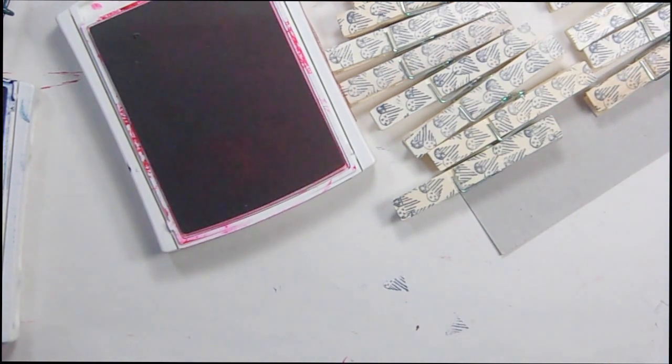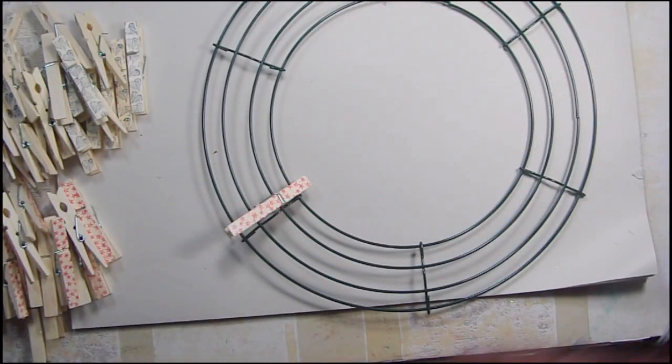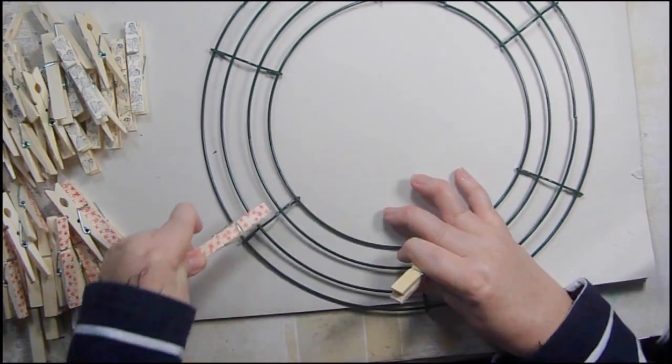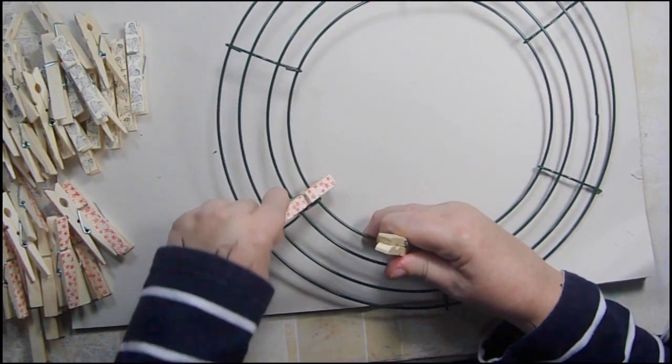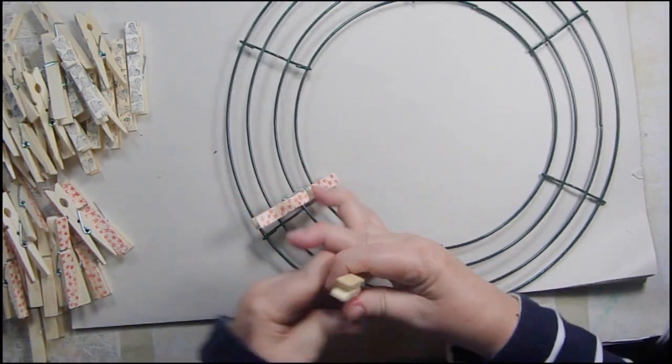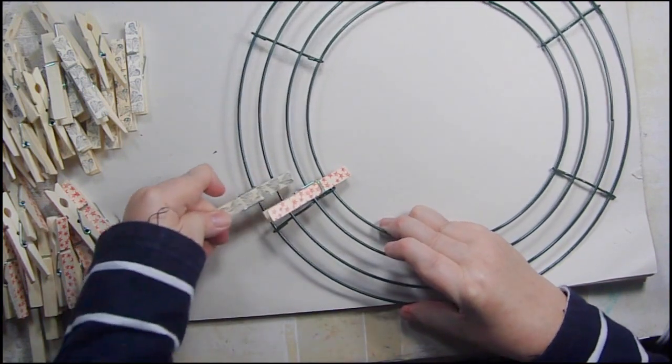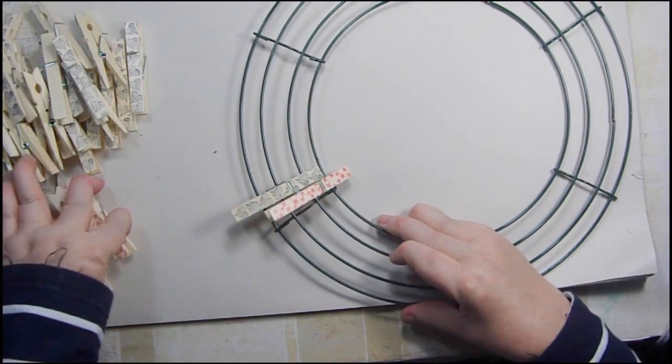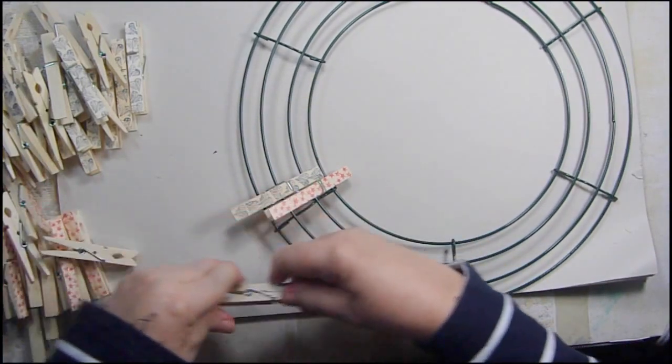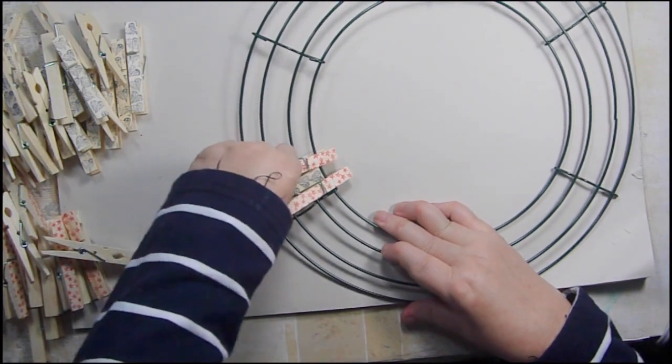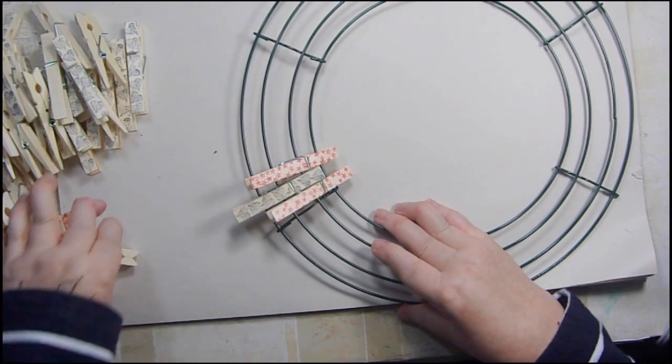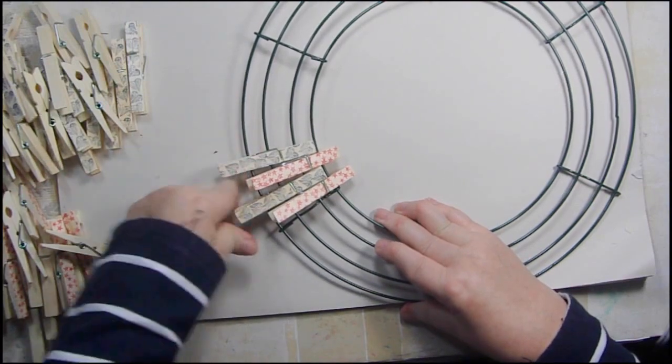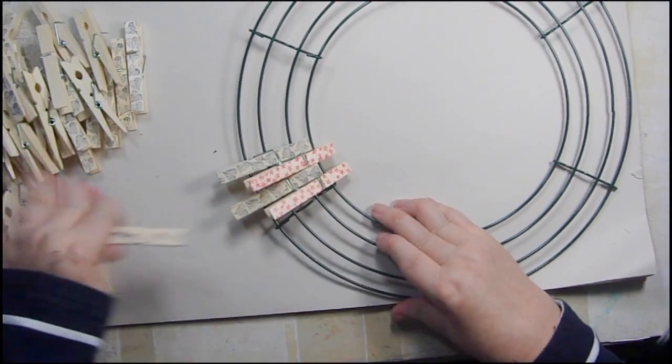So the first pin that you put in, you're going to put over the inside two and as close to this bar as you can. Then the next one you're going to put on the second and third one, and then you're going to repeat. The red one is going to go into the inner one like that, and then the blue one goes onto those two, and you want them as tight together as you can get them.